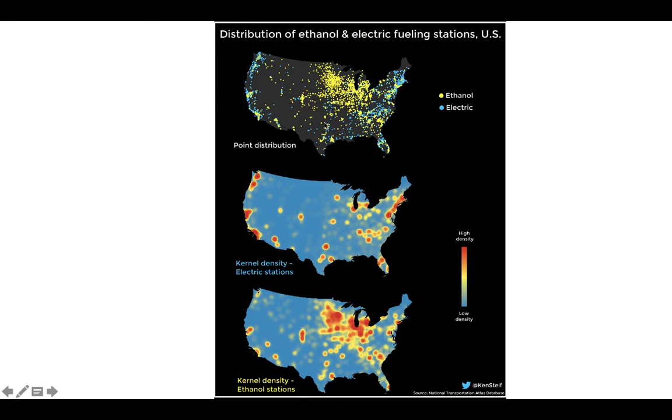Here's an interesting map looking at ethanol and electric fueling stations in the United States. Ethanol stations are shown in yellow, electric in blue.